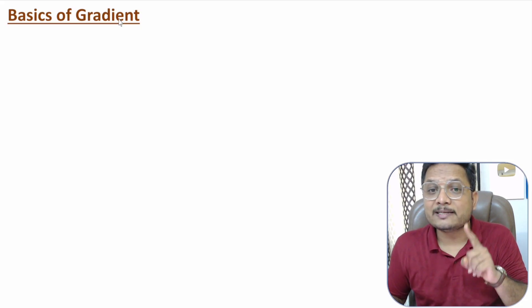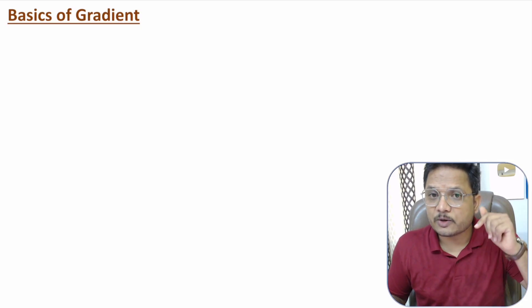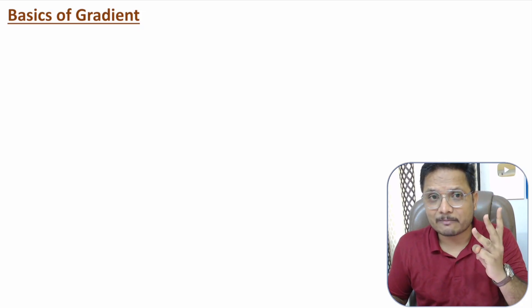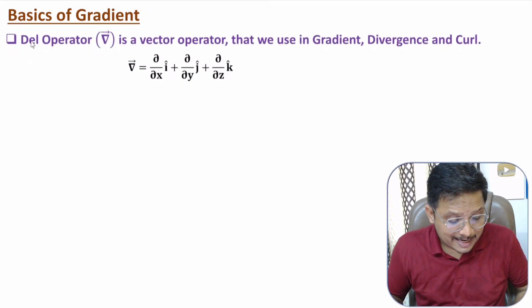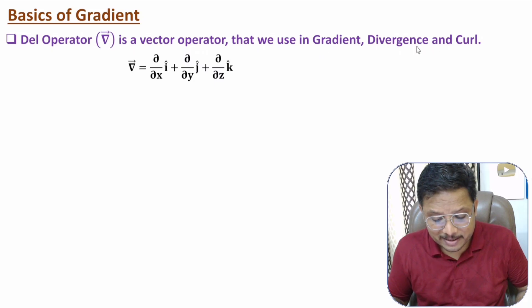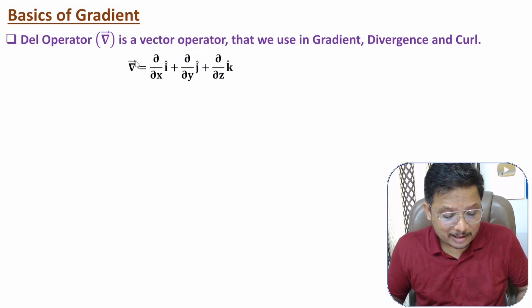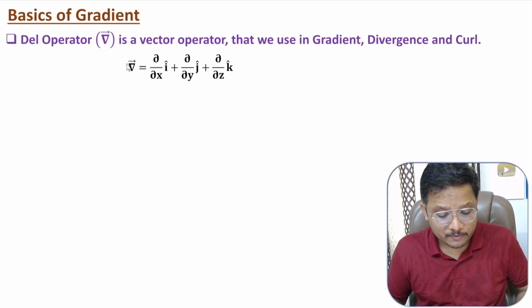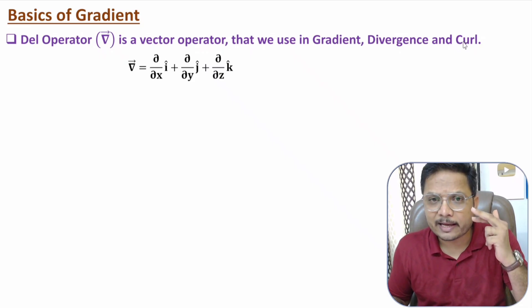First of all, one should know what is the DEL operator. Using the DEL operator, we can identify gradient, divergence, and curl. DEL operator is a vector operator. DEL operator is: del/delX in the I direction, plus del/delY in the J direction, plus del/delZ in the K direction. Using the DEL operator, we can identify gradient, divergence, and curl.